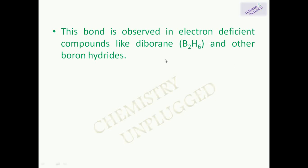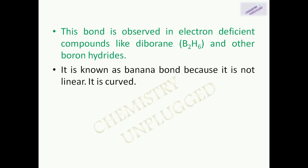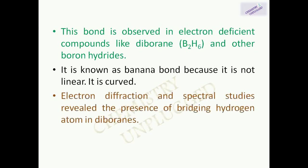This type of bond is observed in electron-deficient compounds like diboranes and other boron hydrides, and in cyclopropane and other cycloalkanes. It is also known as a banana bond because it is curved in nature — it is not linear but a curved bond. The presence of bridging hydrogen in diboranes was determined by electron diffraction.